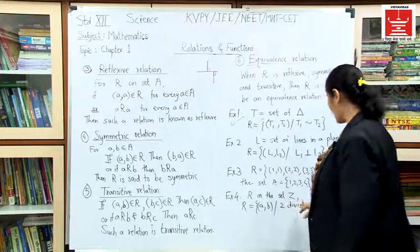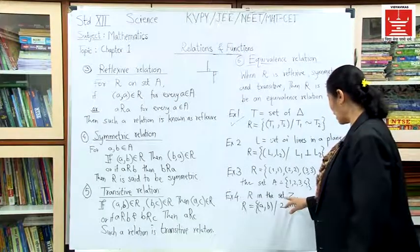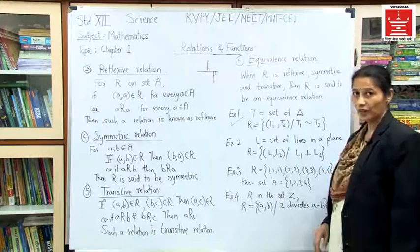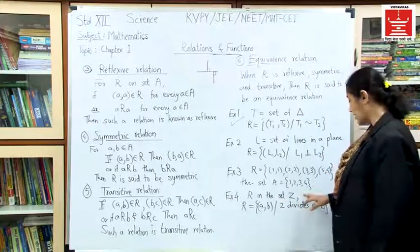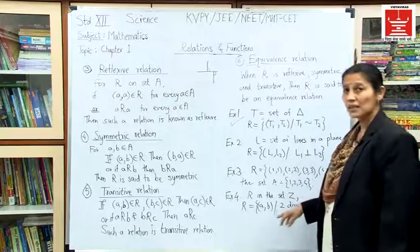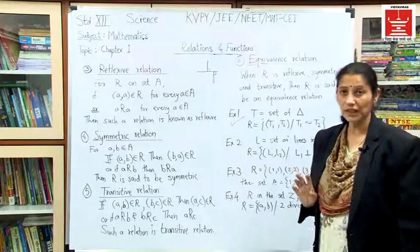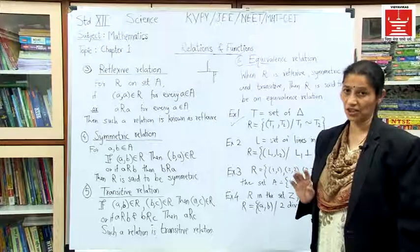Now we will see the next example. R is a relation on the set Z, where Z means the set of integers.